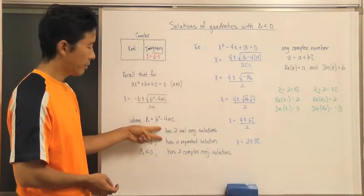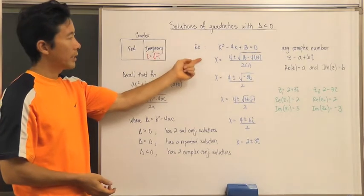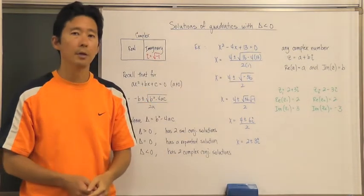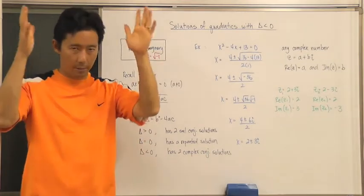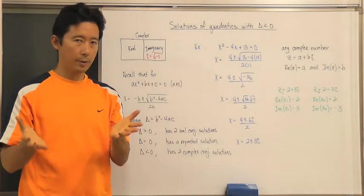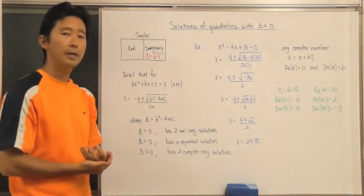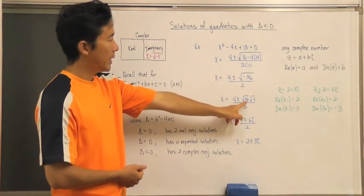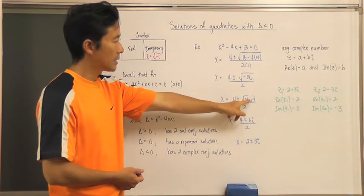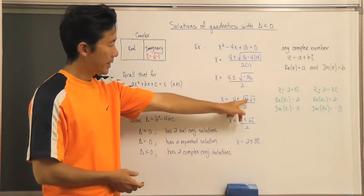Here's an example: x squared minus four x plus thirteen equals zero. When we apply the quadratic formula, we get four plus or minus the square root of negative thirty-six, divided by two. Before, we would stop and say there are no solutions — the parabola doesn't cross the x-axis. But now we don't have real solutions; instead, we can continue by writing the square root of negative thirty-six as the square root of thirty-six times the square root of negative one, using our rules for radicals.